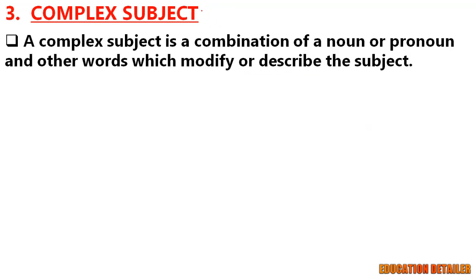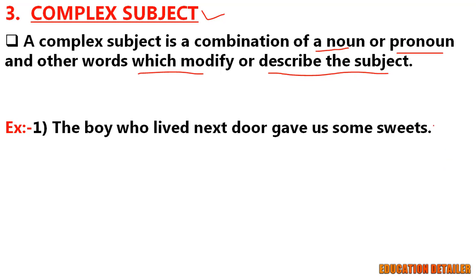Third and last type: complex subject. A complex subject is a combination of a noun or pronoun and other words, or you can say modifiers, which modify or describe the subject. Look at the first example: the boy who lived next door gave us some sweets. Here the main noun is boy, or you can say he is the performer. And who lived next door gives us some information or describes more about the boy. So the boy who lived next door combinedly called the complex subject.